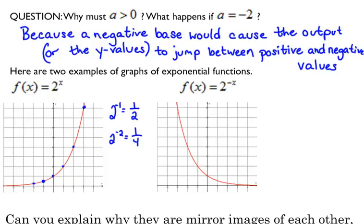Here is the graph of 2 to the negative x. Now you see some similarity here between these two graphs. They have the same basic shape. It's just kind of like it's flipped over. So next question here.